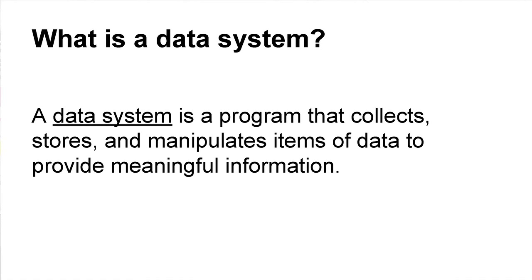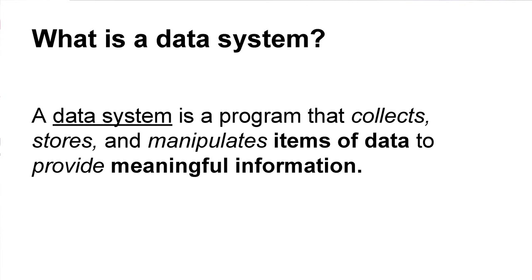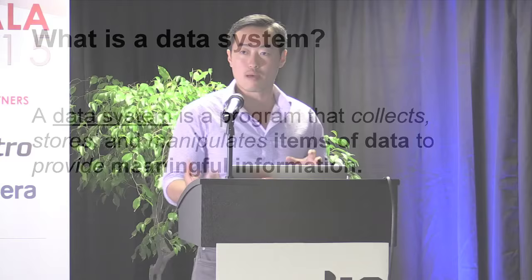Let's start with the question: what is a data system? I went on Wikipedia — itself a pretty interesting data system — and found this: a data system is a program that collects, stores, and manipulates items of data to provide meaningful information. The verbs matter — collect, store, manipulate, display — but I think the nouns are more important. This definition breaks the data system into two parts: items of data as input, and meaningful information as output. These two things are quite distinct, and that itself is a data system.